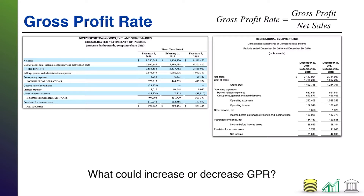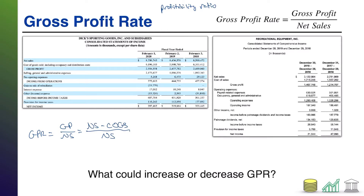First of all, the gross profit rate — what is this? Well, it's a profitability ratio. What I mean by that is it is going to tell you about the profit of the company, and specifically it's going to tell you about the profit of their product. Notice the components: gross profit over net sales. GPR equals GP over NS, net sales. Gross profit, if you're familiar with how that's calculated on your income statement, is simply net sales minus COGS. And now all of this is over net sales.